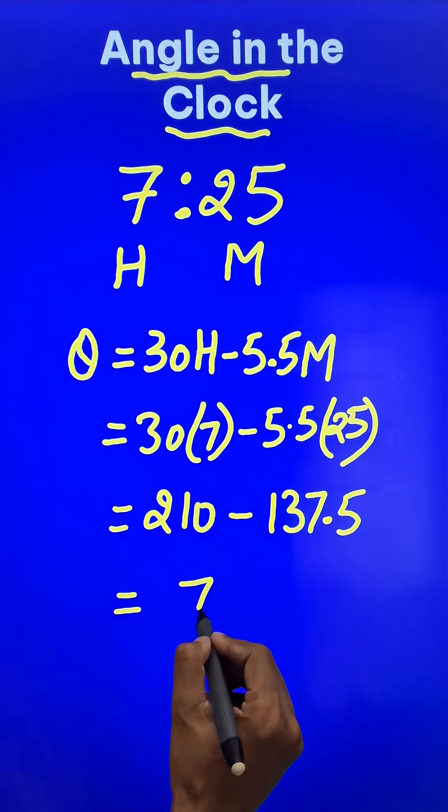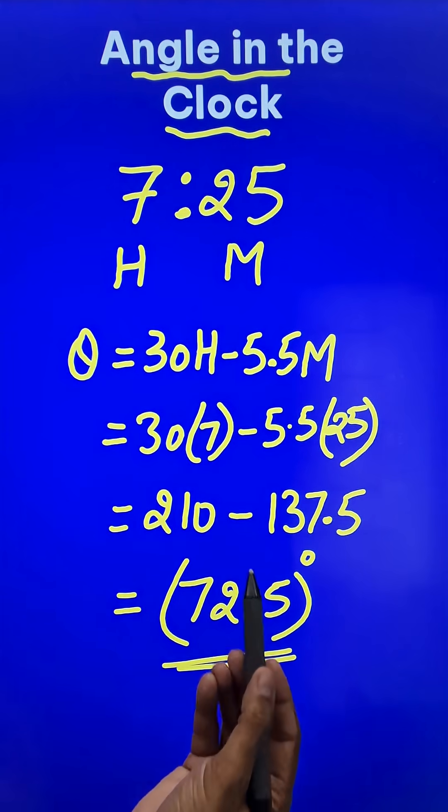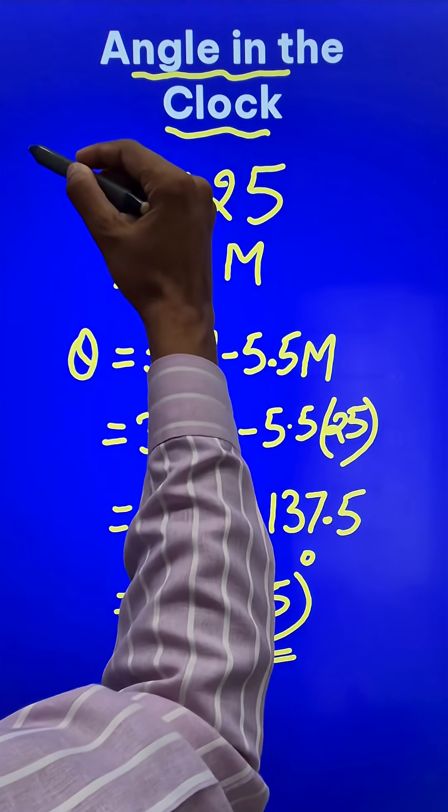When you subtract them, you will get 72.5 degrees, and that happens to be the acute angle, or the smaller angle, between the minute hand and the hour hand at 7:25.